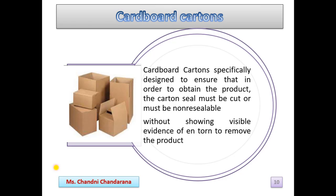The next is the cardboard cartons. Folding paperboard cartons are used as secondary packaging for products like OTC products. Sealed cartons use externally applied glue or hot melt to provide cartoon sealing. The cardboard carton is specially designed to ensure that in order to obtain the product, the carton seal must be cut or must be non-releasable without showing visible evidence of entry.